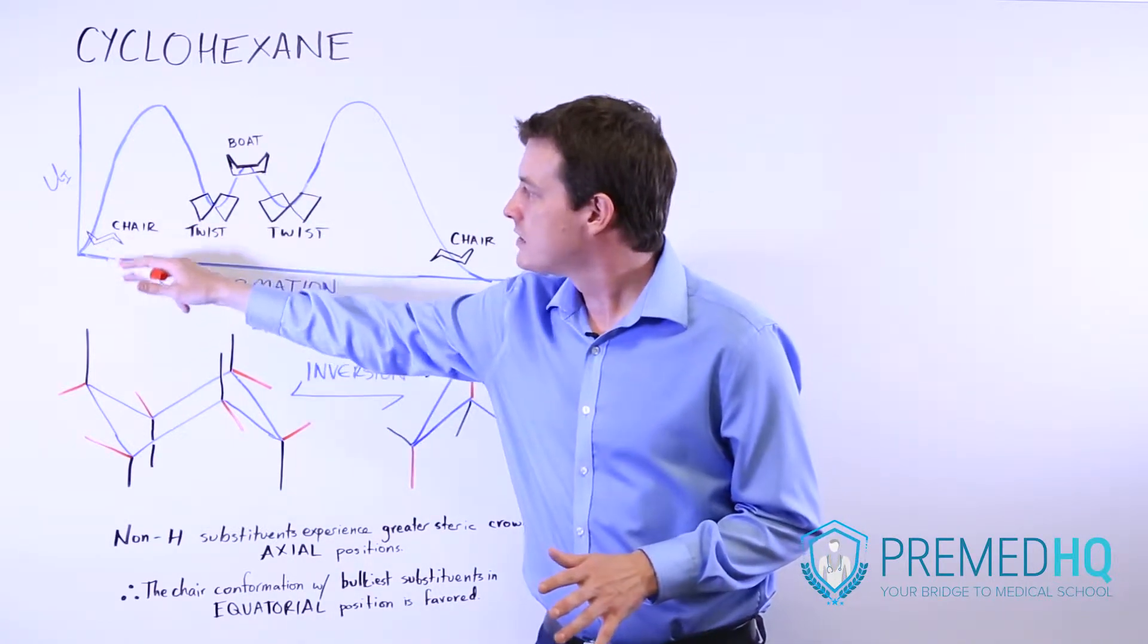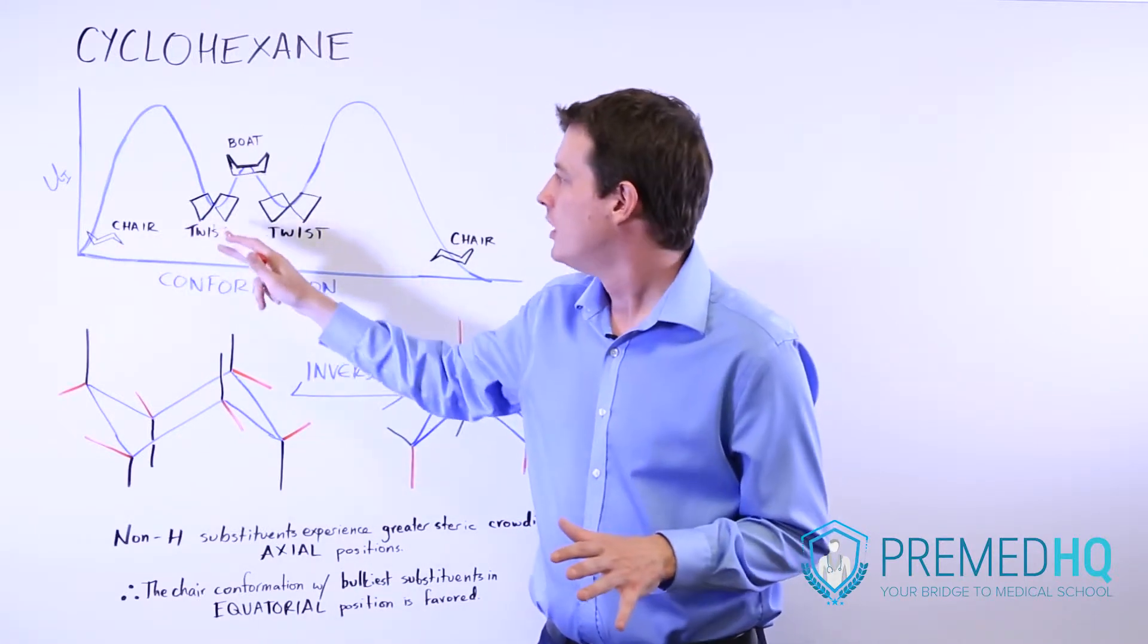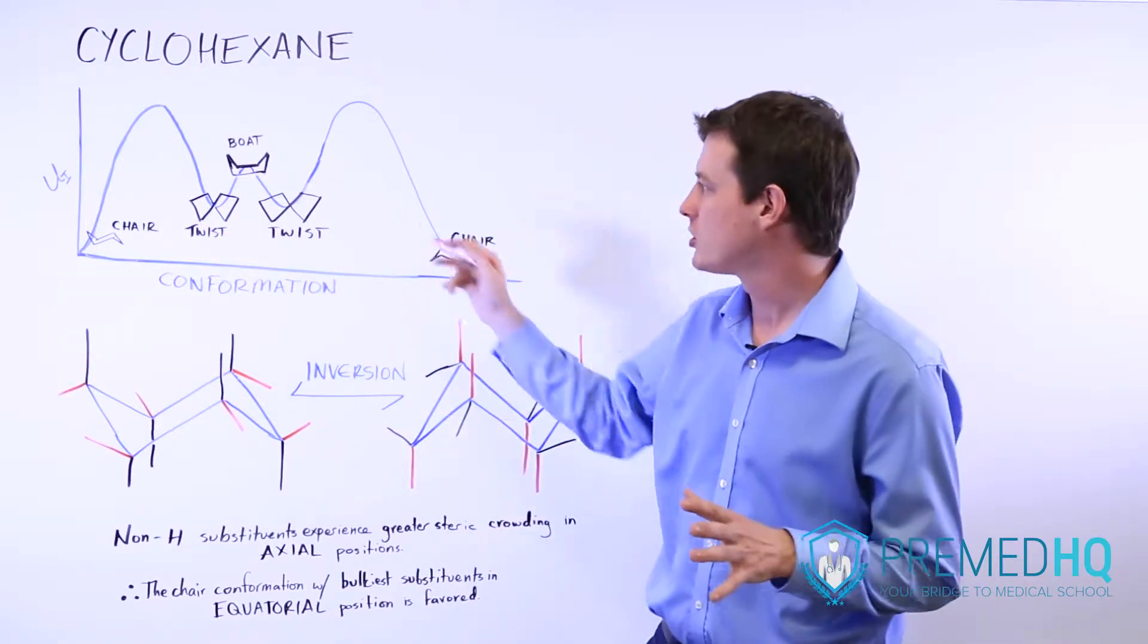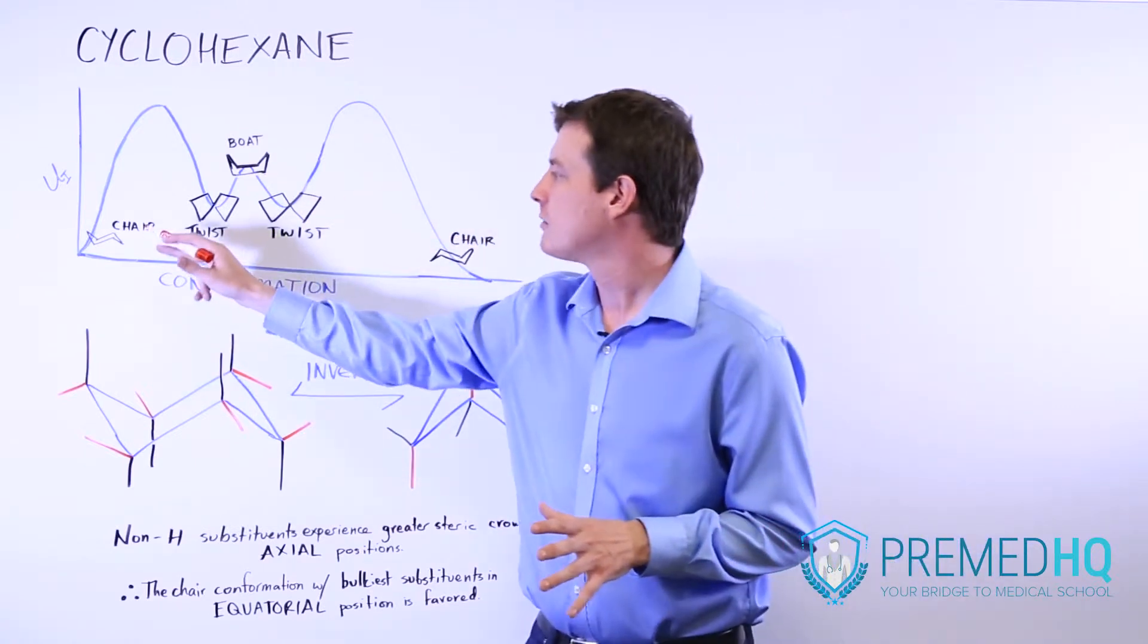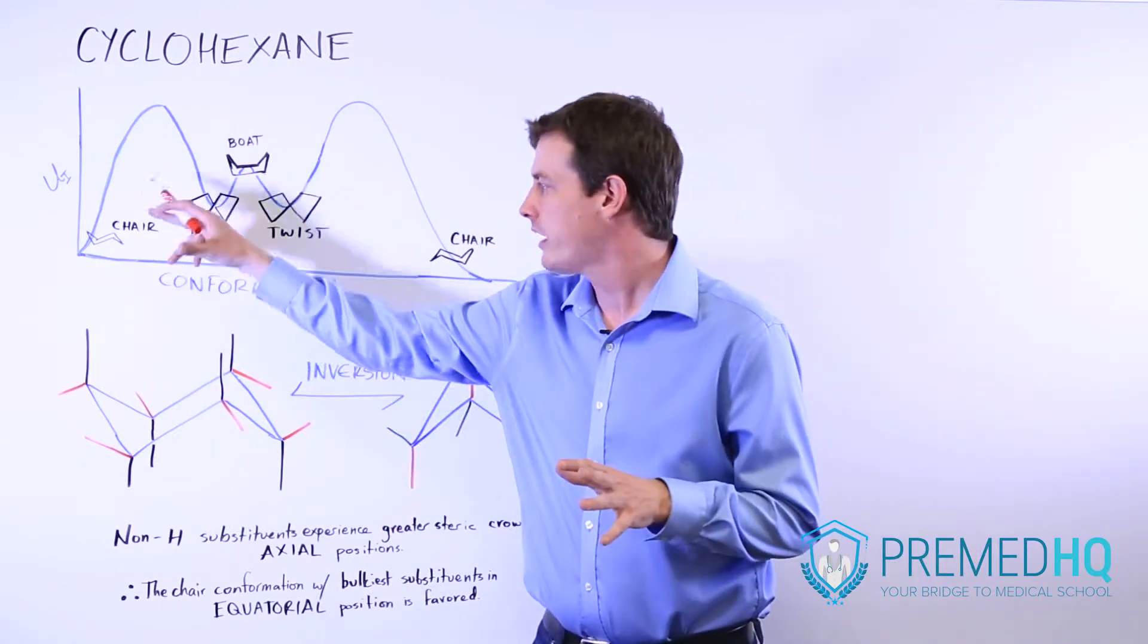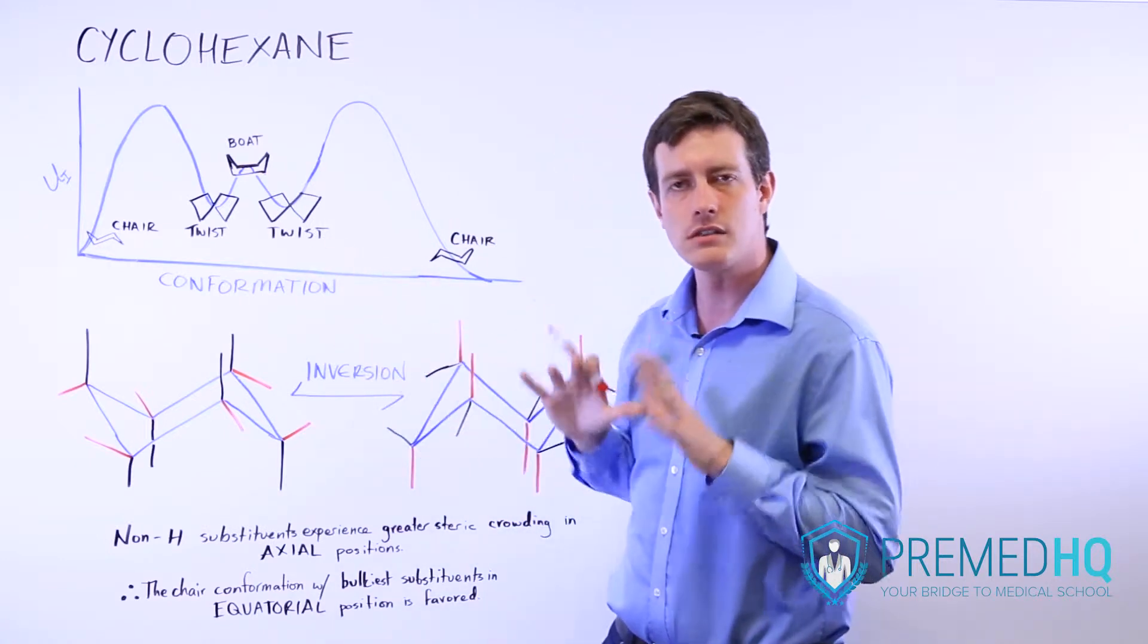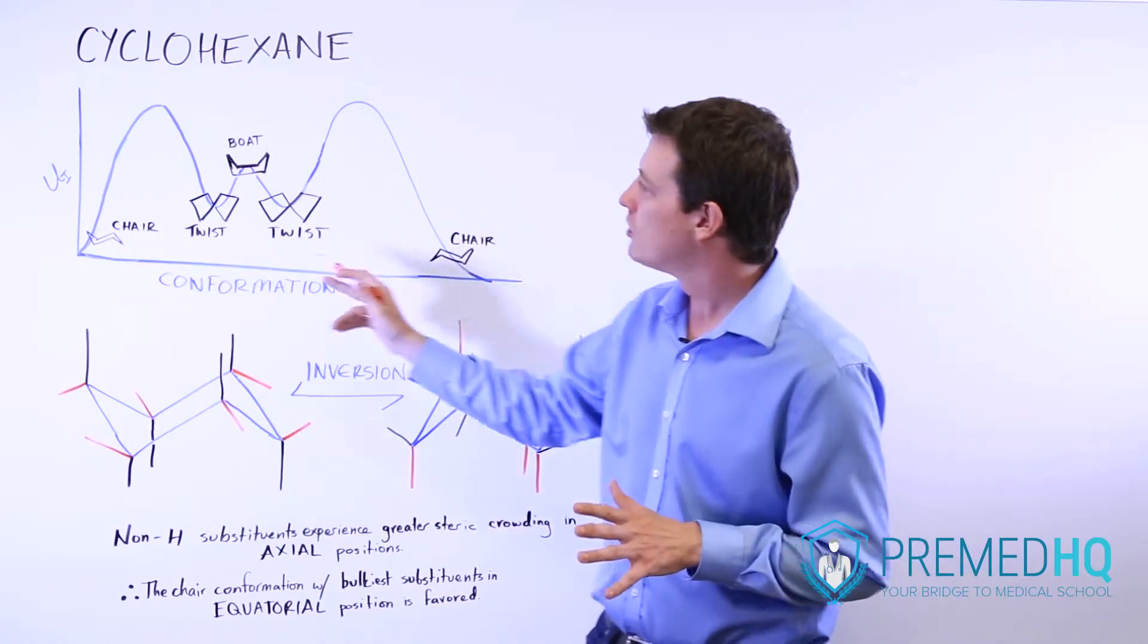And that is because the substituents are as far from each other as possible. So remember that all of these bonds have a tetrahedral conformation when you're looking at a twist or a boat or a chair. But within the chair conformation, the substituents to that ring are going to be as far from each other as possible. And so that is the lowest energy form and the form that it would prefer to exist in.